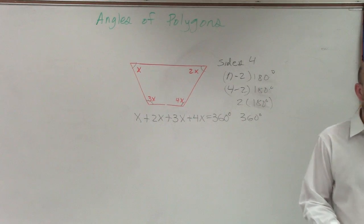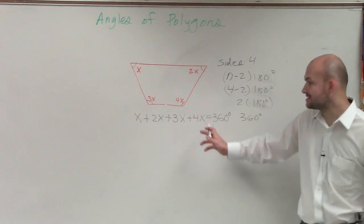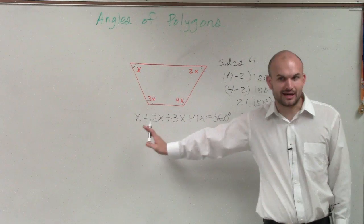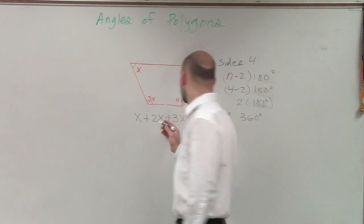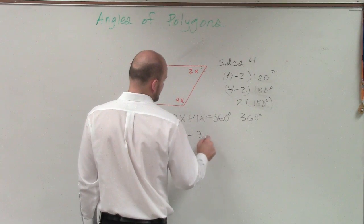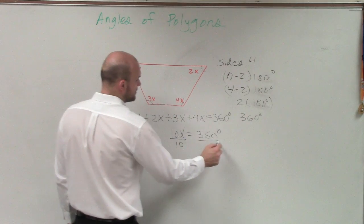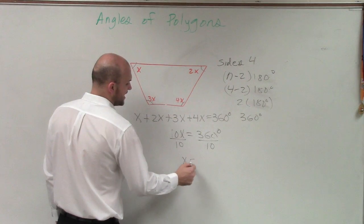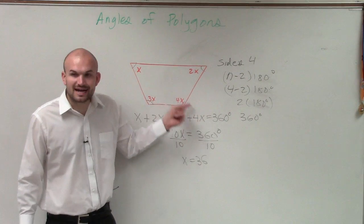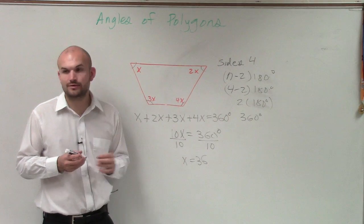So now all I simply need to do from here is just combine my like terms. Since these are on the same side of the equation and they have like variable factors, I can just combine them. So therefore, I get 10x equals 360 degrees. Solve for x, divide by 10, divide by 10, x equals 36. Therefore, the value of x is going to be 36 for the sum to equal 360.